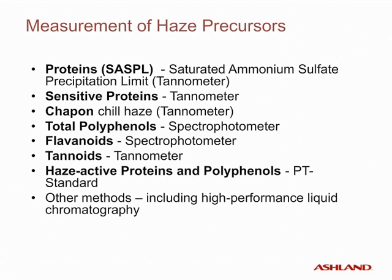Haze-forming proteins are measured using the saturated ammonium sulfate precipitation limit called SASPOL. This value is measured using the synometer instrument and gives an indication of the quantity of proteins present in the beer sample. We can also measure the sensitive proteins with the synometer using tannic acid as the reagent. This test measures the fraction of proteins that are highly haze-active and readily complex with polyphenols to form haze.